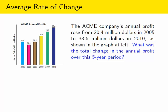So the total change is going to be the difference between what the profit was at the end of the period and what the profit was at the beginning of the period. We're going to subtract the profit in 2010, which was $33.6 million, minus the profit in 2005, which was $20.4 million, leaving us with a difference of $13.2 million.